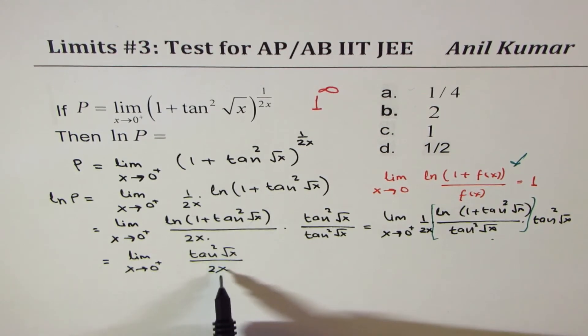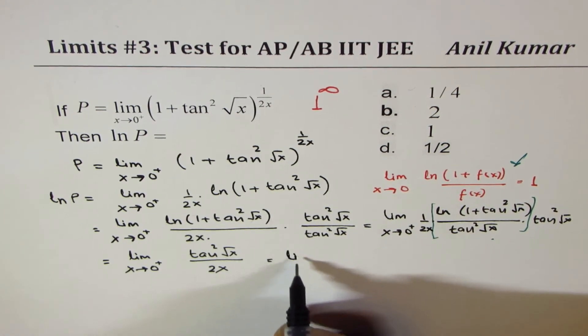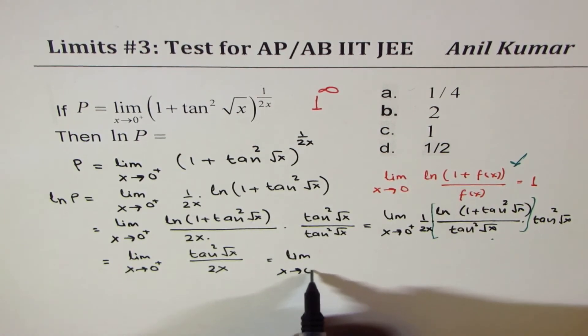Now, tan²√x, we could write this as, let me rewrite this, limit x approaches 0.